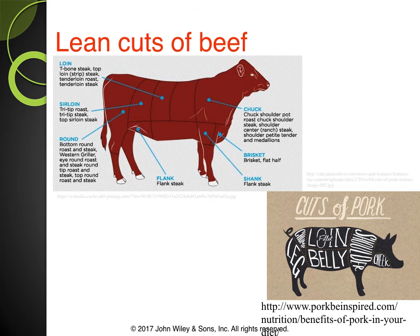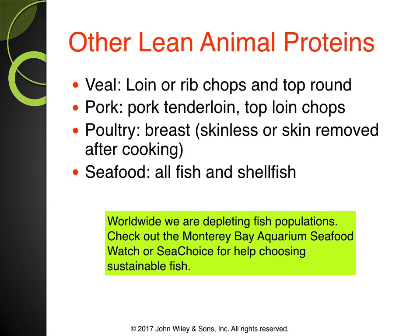Porkinspired.com is a great resource for anyone interested in leaner cuts of pork or learning which cuts are higher in saturated fat so you can avoid or limit those. Other lean animal proteins include veal, loin chops, and chicken breast, as well as seafood. If you're environmentally conscious, you can check out the Monterey Bay Aquarium Seafood Watch or Sea Choice for choosing sustainable fish. Whole Foods also has a section showing where their fish comes from and whether it's wild caught.